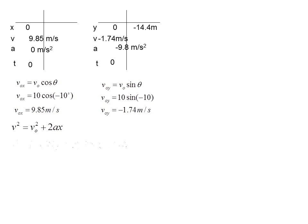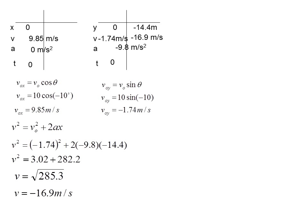All right. And so I plug in my numbers. I get negative 1.74 as my v naught. And then for a, I've got negative 9.8. And for y, negative 14.4. When I work out that, I get 3.02 plus 282.2. And I add those. And I get 285.3. And then when I take the square root, I get v equals negative 16.9 meters per second.